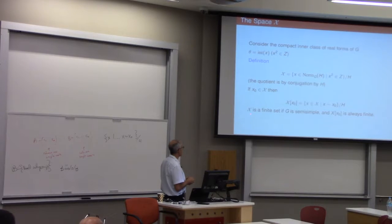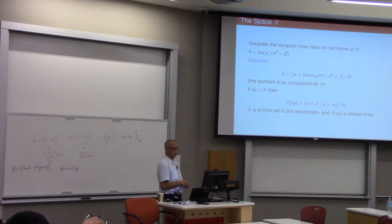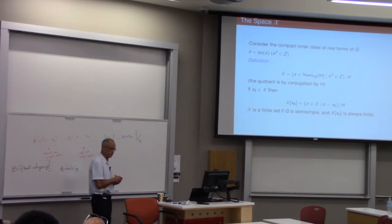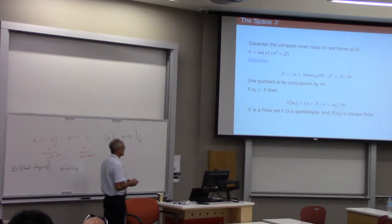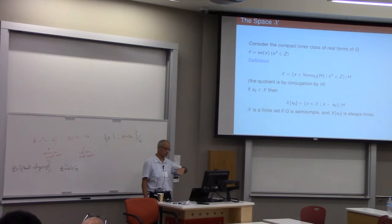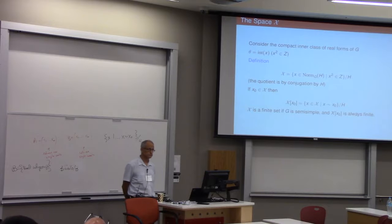This is clearly the union of a bunch of these spaces that I wrote down before. And it's this space that's essentially finite. Because of the center, there could be some infinite, it could be infinite due to something having to do with the center. But that's the essential part. And then if you fix X-naught, you get this previous definition. This is a subset of this.